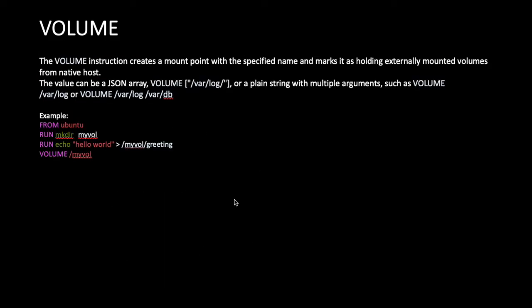The next instruction is VOLUME. The VOLUME instruction is similar to using docker run -v with a volume name mapped to a path inside the container. The VOLUME instruction creates a mount point with the specified name and marks it as holding externally mounted volumes from the Docker host. The value can be in JSON array format or a plain string with multiple arguments.